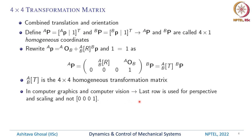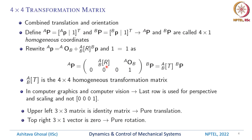In computer graphics and computer vision, the last row is not 0, 0, 0, 1 — if you want to show perspective and scaling, you change those numbers. This is a very useful way of representing combined translation and orientation of a rigid body in 3D space. The upper 3 by 3 matrix ABR represents rotation. If that matrix is an identity matrix, then the 4 by 4 homogeneous transformation matrix represents pure translation. Similarly, if the last column vector AOB is 0, 0, 0, 1, then it represents pure rotation. So this 4 by 4 matrix can represent all aspects of rotation and translation of a rigid body in 3D space.